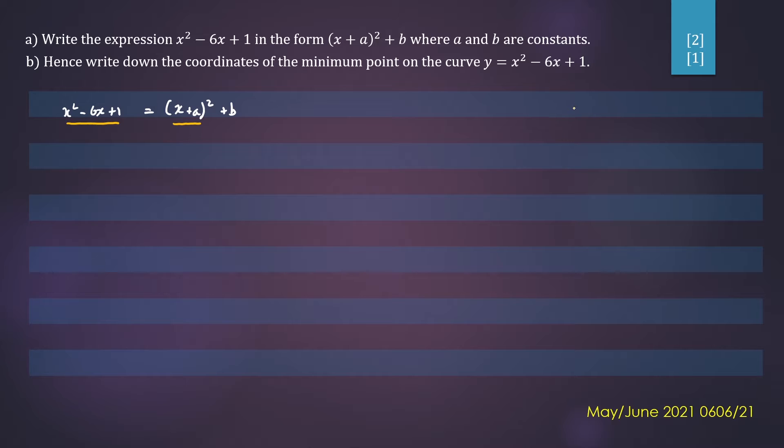The formula for completing the square can be written as x squared plus bx plus b on 2 all squared equals x plus b on 2 all squared. So when we compare our question with the formula, we can see that b equals negative 6. And this last term tells us to divide this by 2 then square it. So let's do that.